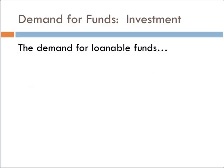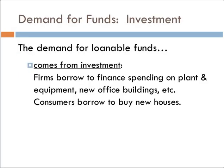Demand for loanable funds comes from investment. Firms borrow to finance spending on plants and equipment, new office buildings, etc. Consumers borrow to buy new houses. Notice — remember we talked about consumption, and that consumption was not dependent on the interest rate, so we don't have consumers borrowing there. So why do we have consumers borrowing here? That's because this is for new houses.